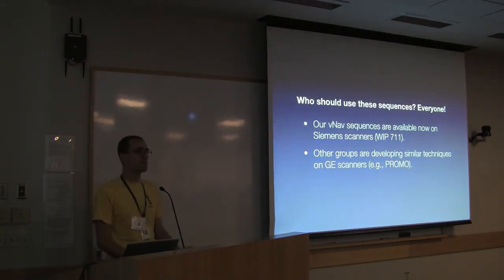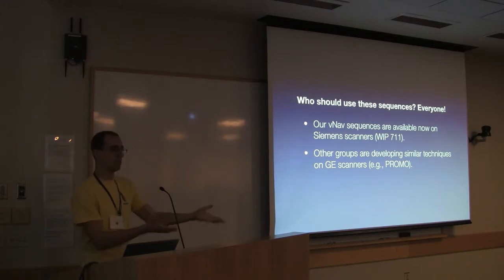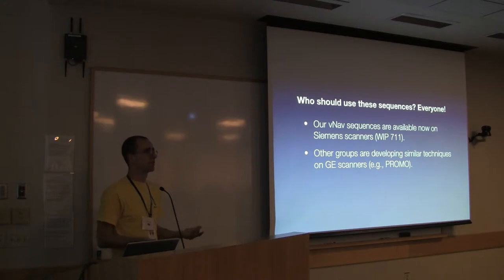Having showed you all the awesome reasons why you should use it, I'm going to say that everyone should be using motion-corrected sequences if they're available on your platform. Our VNAV sequences are now available on Siemens scanners. I'm sorry to say not all of the Siemens scanners yet, but on many of the ones that are out there, you can actually just contact Siemens and ask for the works-in-progress package number 711 and they will give you our motion-corrected sequence. If you have a GE scanner, there is similar work going on under the name PROMO. Not exactly the same but approximately similar methods. If you have Philips scanners, I don't know of any work on this right now.